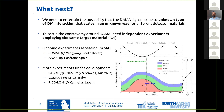This is a plot from a paper from COSINE-100 from last year, where they searched for an annual modulation in their data and essentially placed an upper bound, which, however, is still consistent with the DAMA/LIBRA modulation amplitude. But this is now continuing and being upgraded and will be a very promising way to test the DAMA modulation.